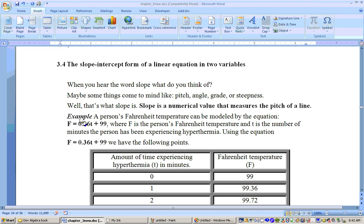Now this number right here is the slope. If we plotted several points like I did here, you'll see like if you put 1 in for T, then 0.36 times 1 is 0.36, plus 99 is 99.36.